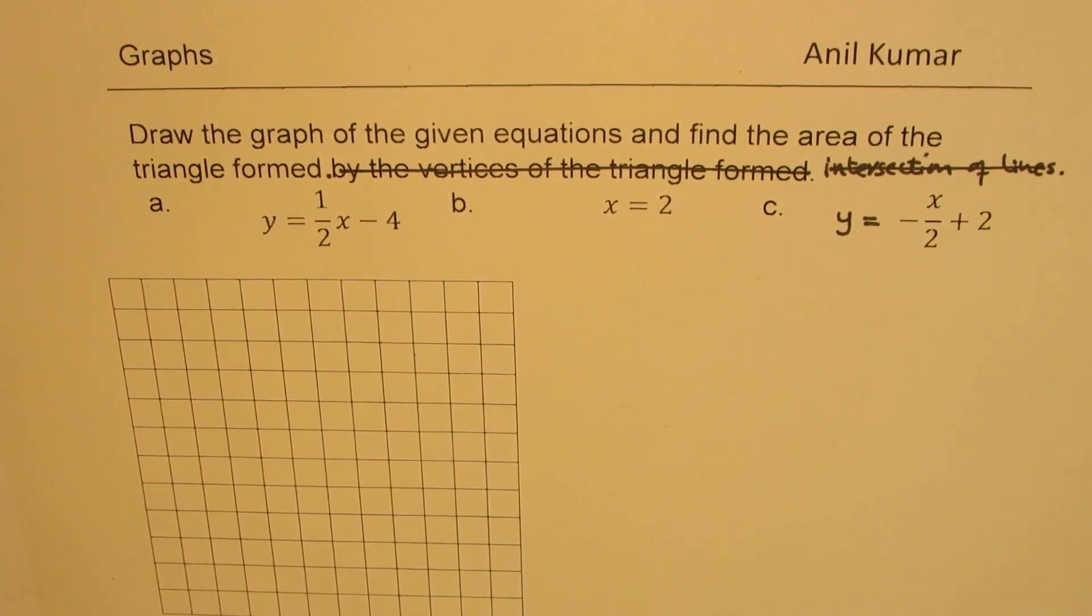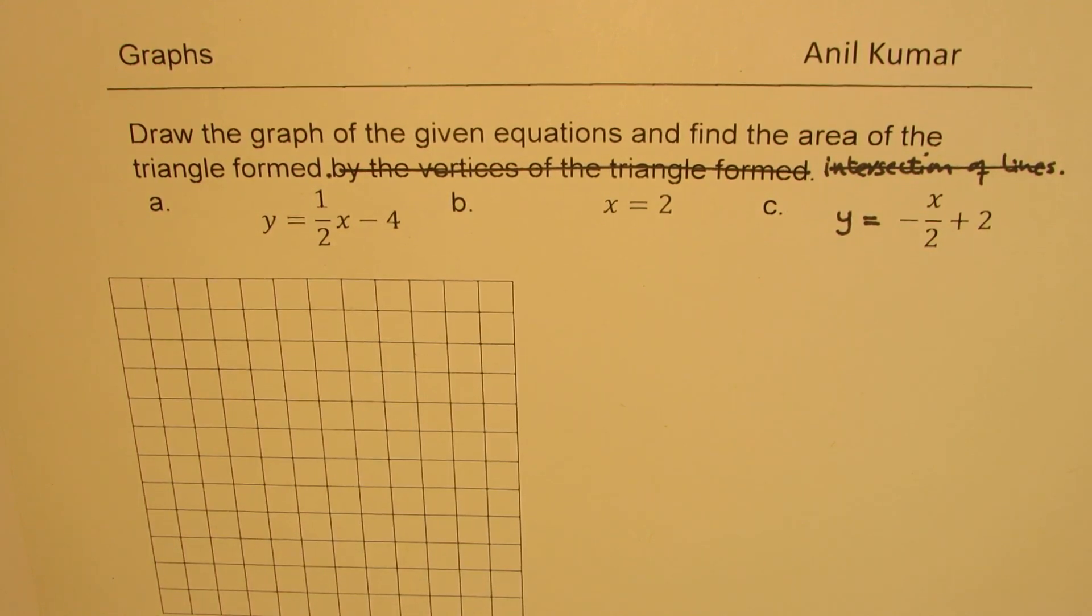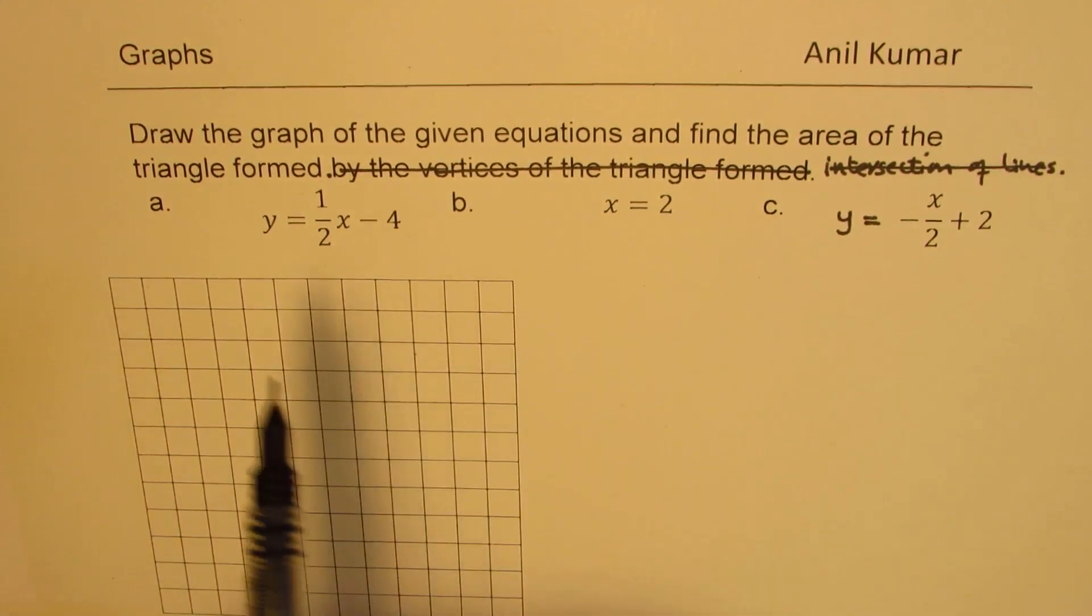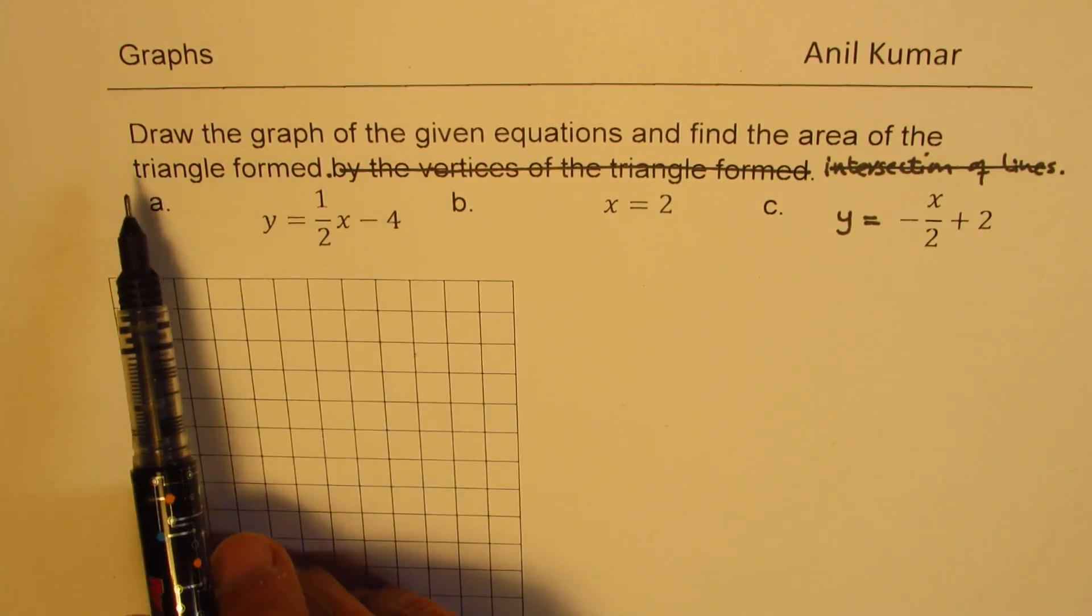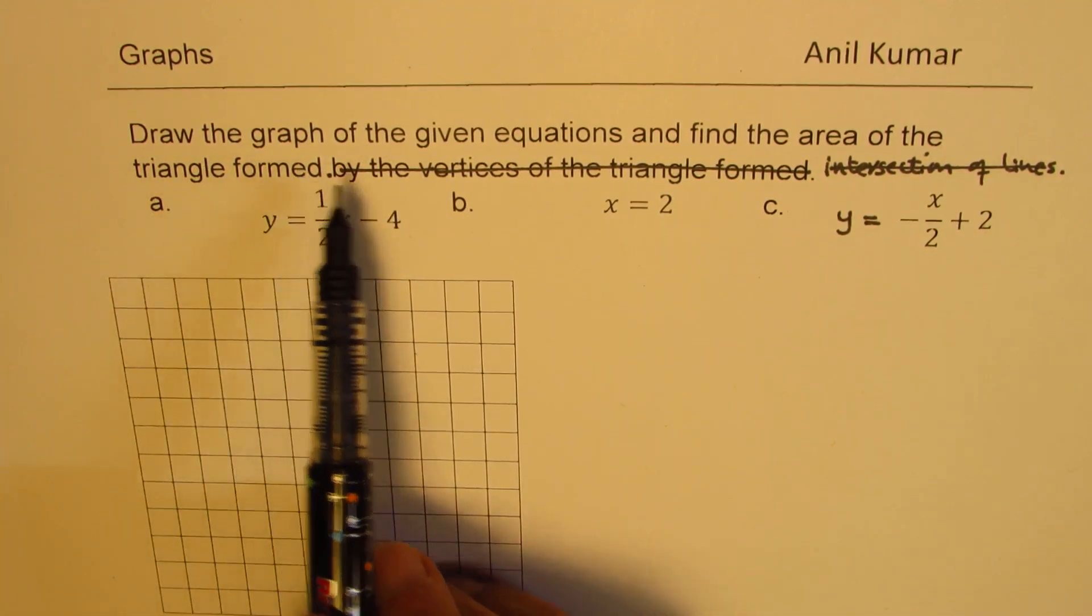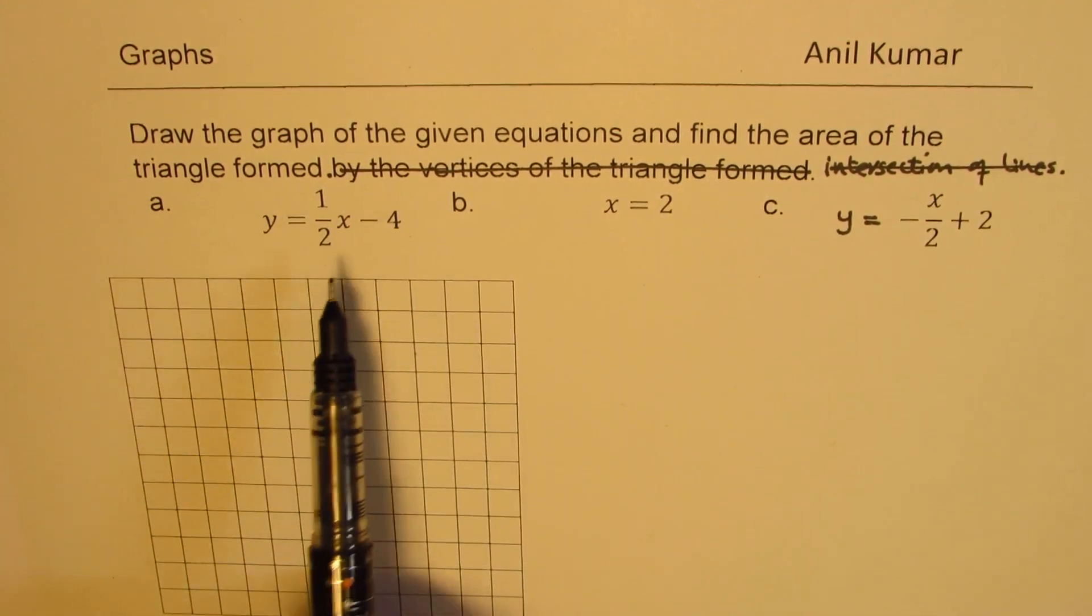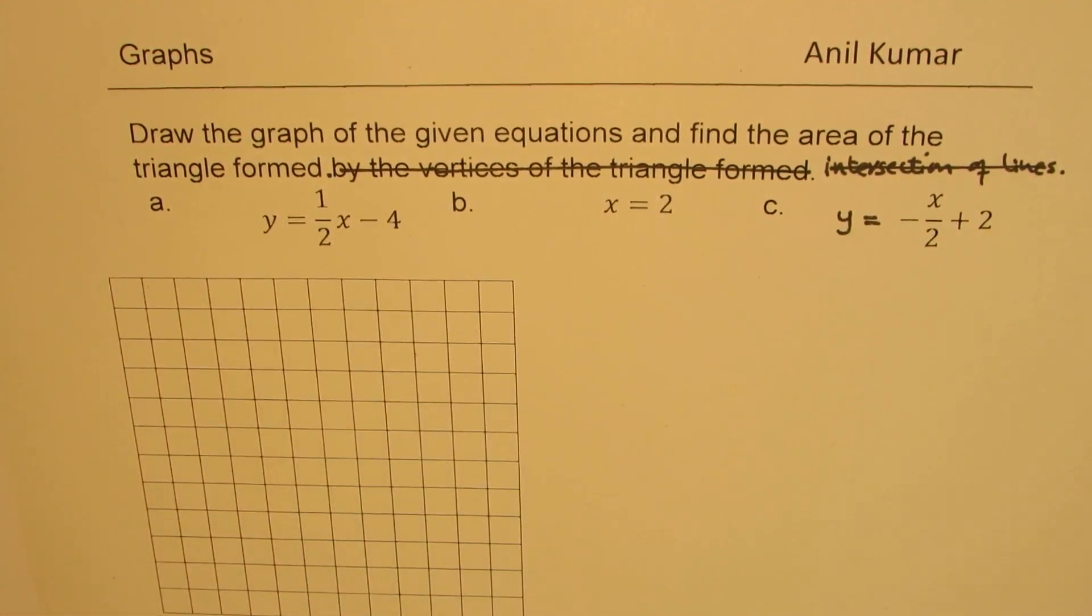I'm Anil Kumar. Welcome to my series on graphs. In this equation, we'll draw a system of equations. They will intersect and form a triangle. We'll find the area of that triangle. There's some typing error here. So the question is: draw the graph of the given equations and find the area of the triangle formed. We have these three equations, and these represent equation of lines.